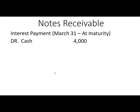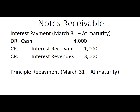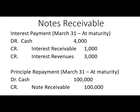On March 31st when the note matures, we receive payment. Total interest is $4,000 for four months. We remove the Interest Receivable of $1,000 recorded last year and record $3,000 in interest revenue for the remaining three months: $100,000 × 12% × 3/12 = $3,000. The principal repayment entry is a debit to Cash and a credit to Notes Receivable. You could combine these two entries, but it's best practice to keep interest payments and principal repayments separated.